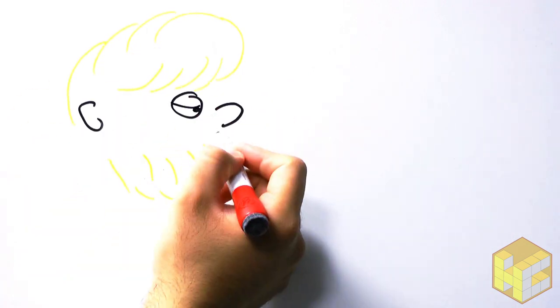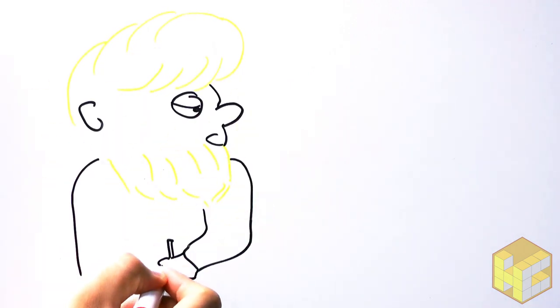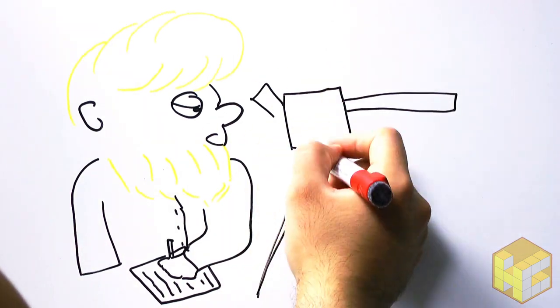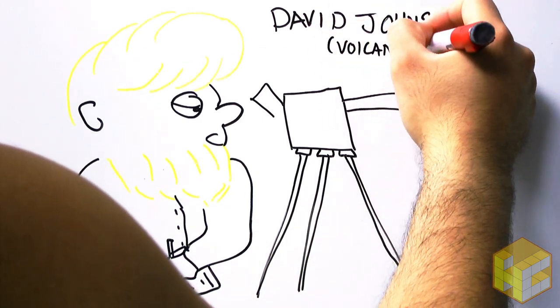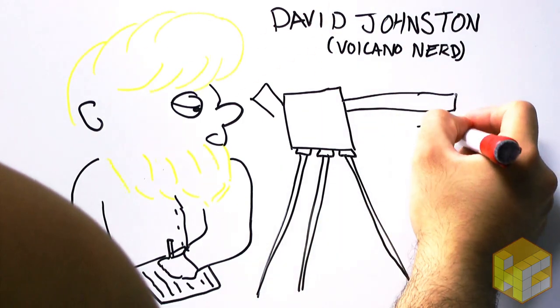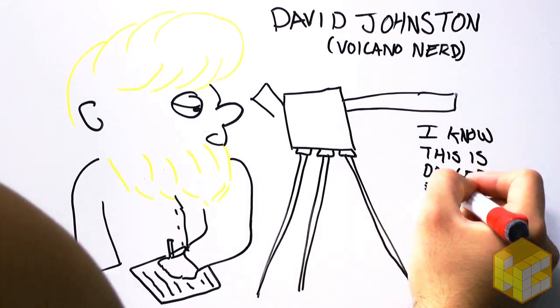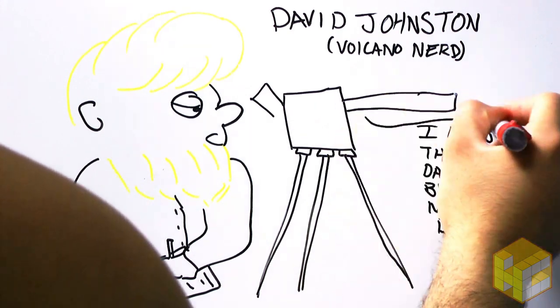Geologists like David Johnston kept on doing critical observations that were crucial in keeping danger zones in place. Johnston worked close to the mountain, knowing full well that any day might be his last. Without his dedication and that of others to the work, the danger zone might well have been even smaller.